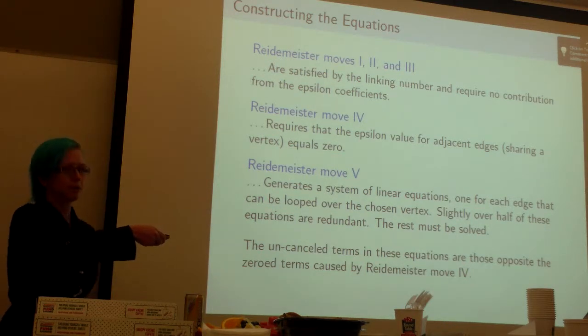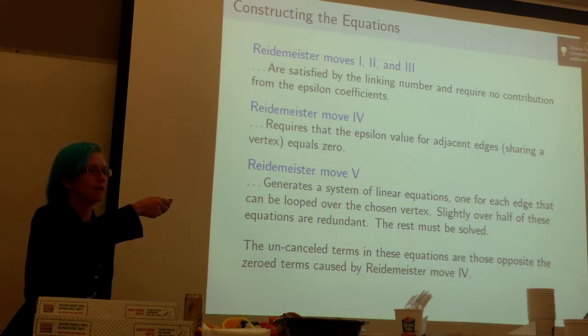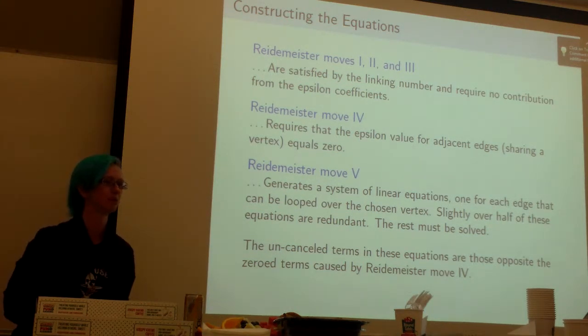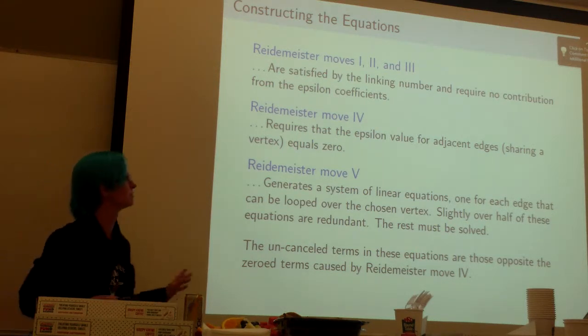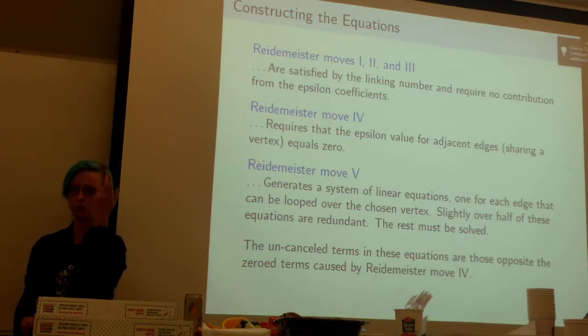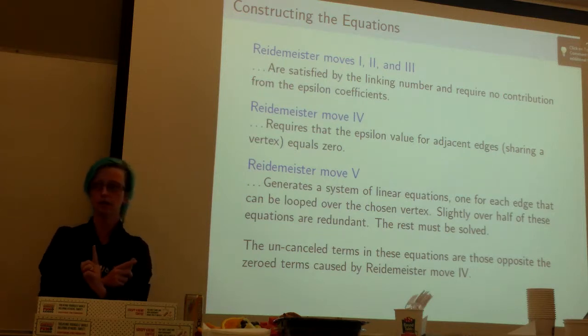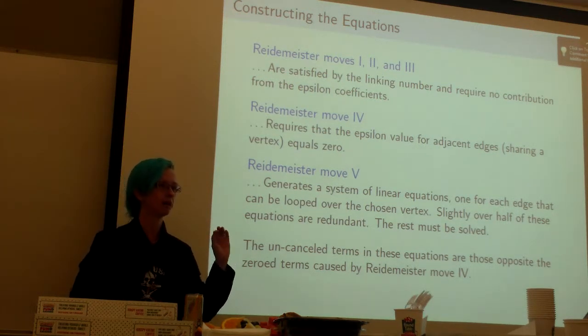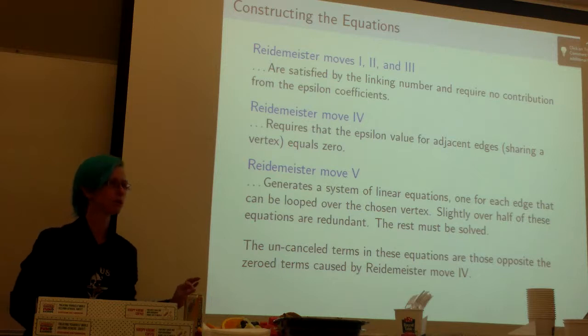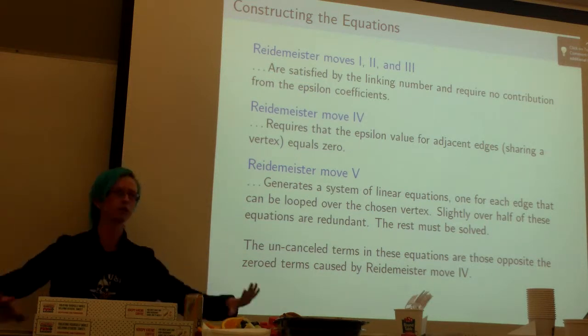Let's see what we can do with the Reidemeister moves under these restrictions. The first three aren't too bad. Remember the linking number was part of the Simon invariant. The linking number handles the first three Reidemeister moves for us, we don't have to even look at them. Reidemeister move four is the one where you have two edges that are just twisted at a vertex. This tells you that if the edges are adjacent coming into the same vertex and they cross each other, the epsilon value must be zero.